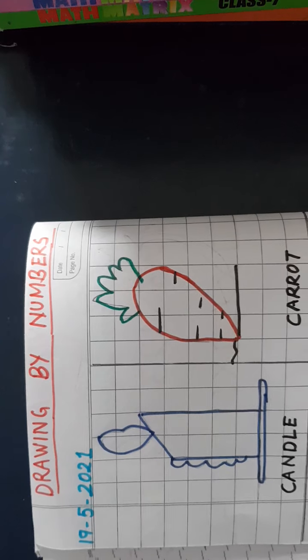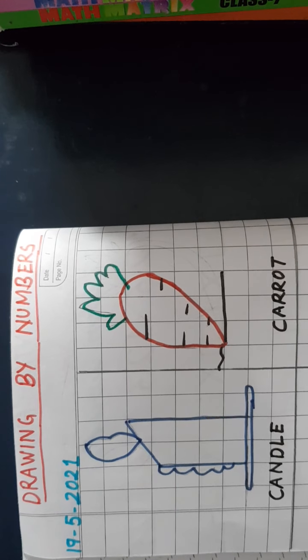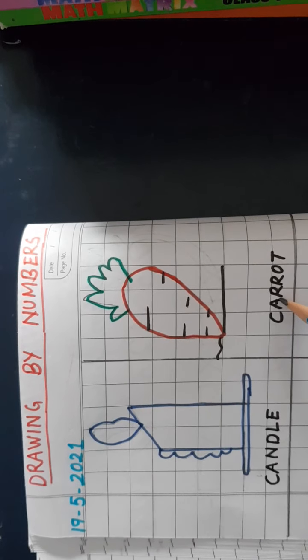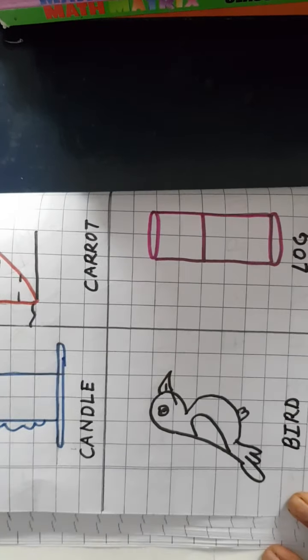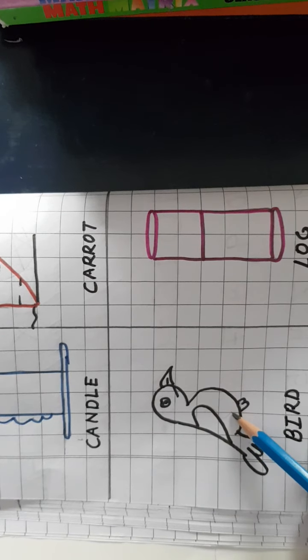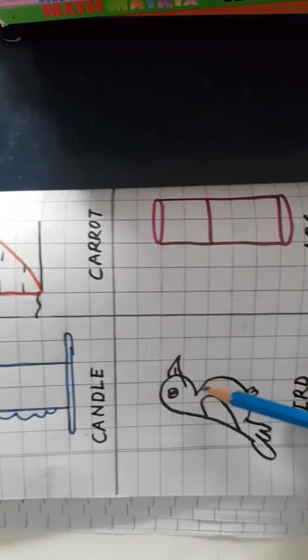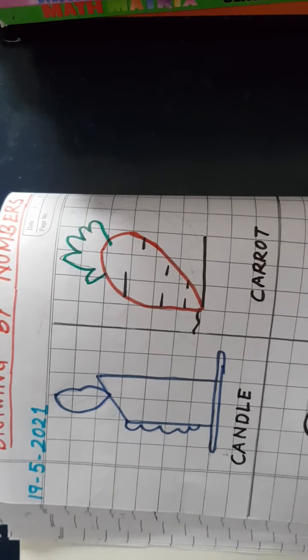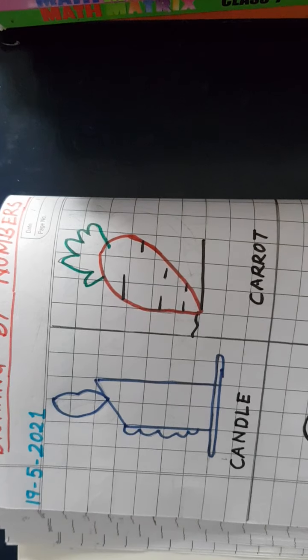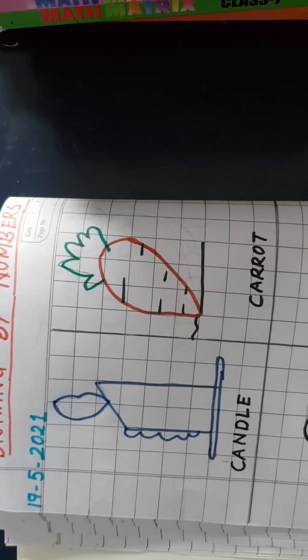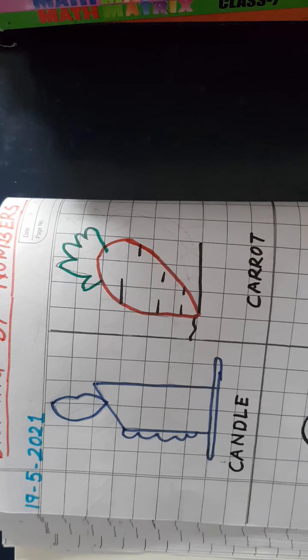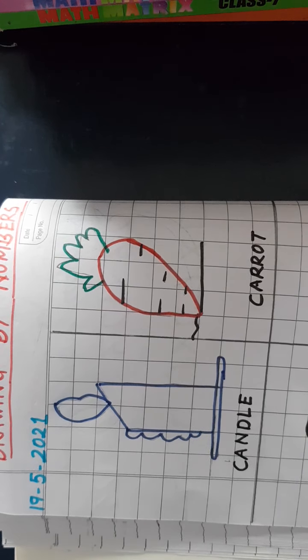I am going to teach you how to draw different pictures and color them by the numbers 1 to 4. As you can see, this is a candle, this is a picture of the carrot, this is bird and this is log. These pictures are drawn by the numbers. If you know how to write the numbers 1 to 4, then you can draw the pictures and color them differently. Let me show you first.